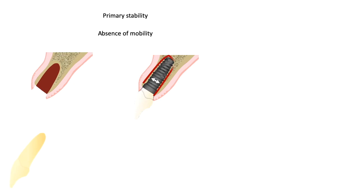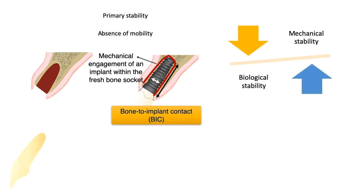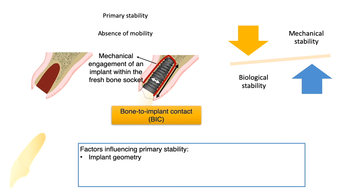Primary stability is obtained by congruency and press fitting, which leads to direct bone-implant contact. It is basically the absence of mobility in the bone bed after the implant has been placed, and depends on the mechanical engagement of the implant within the fresh bone socket. A key factor is the bone-to-implant contact (BIC), which includes implant shape, length, and diameter — these increase the contact area and thus improve primary stability. Other influencing factors include implant geometry, bone density and quality, and surgical protocol such as osteotomy preparation.